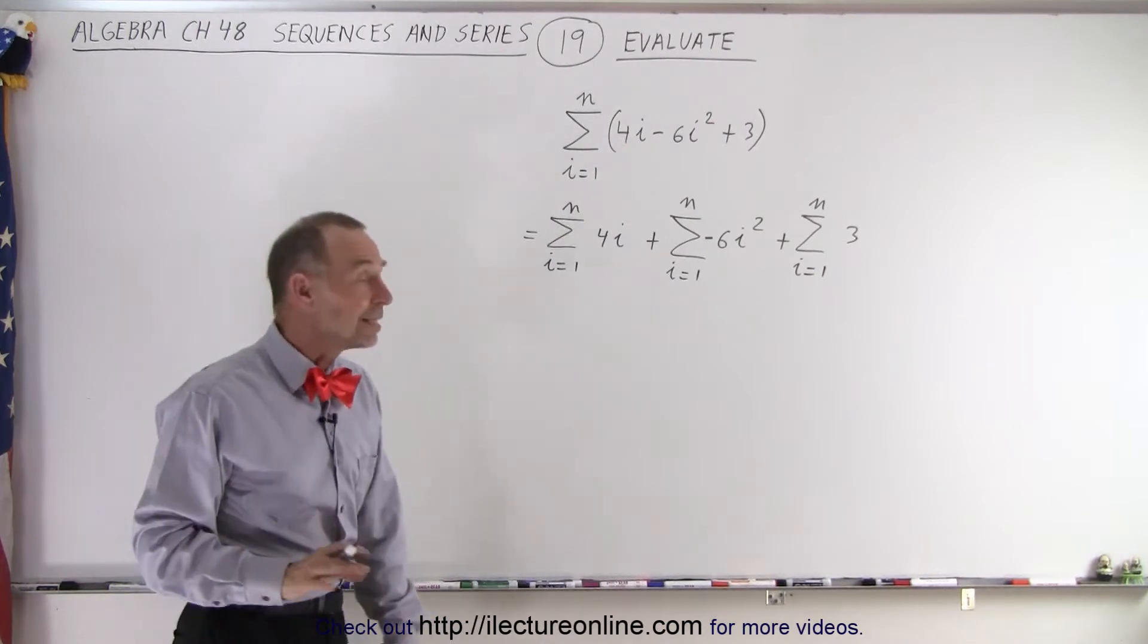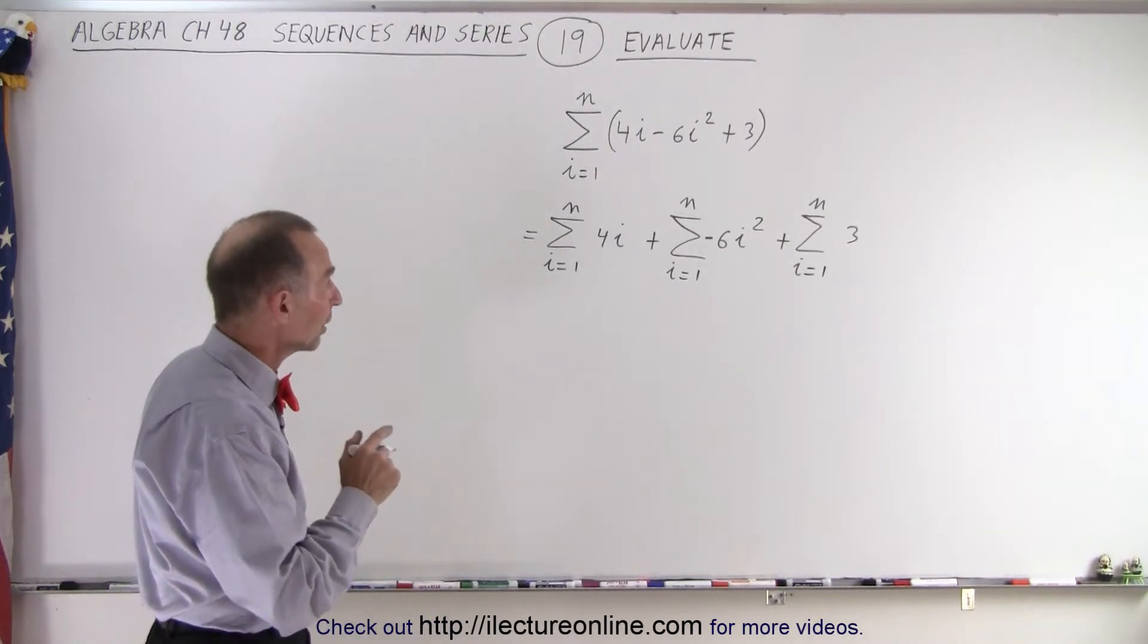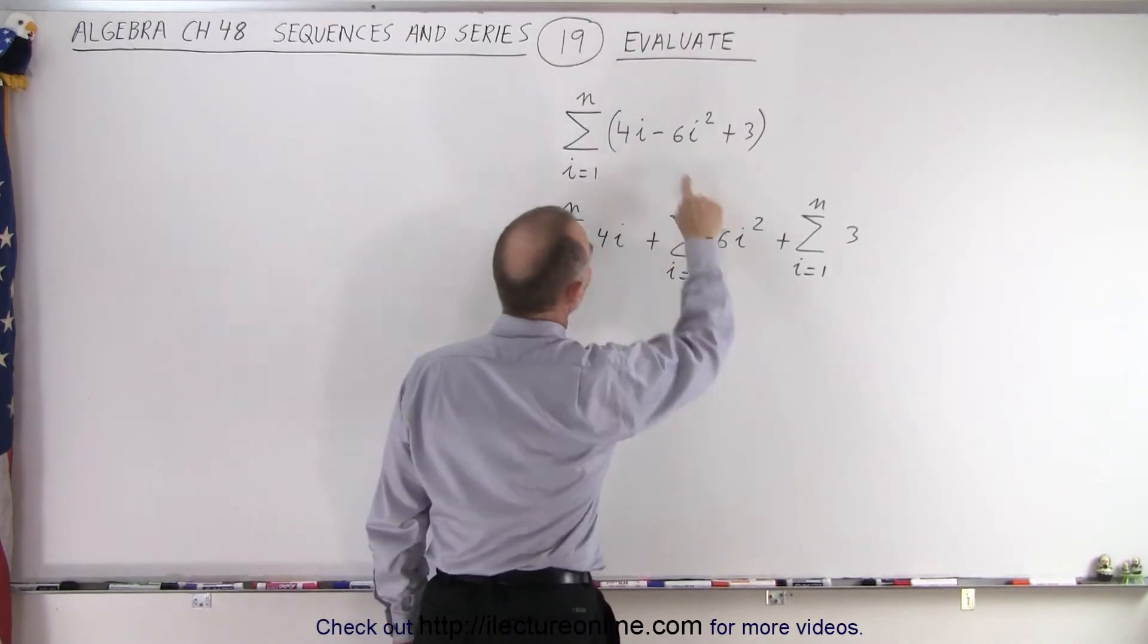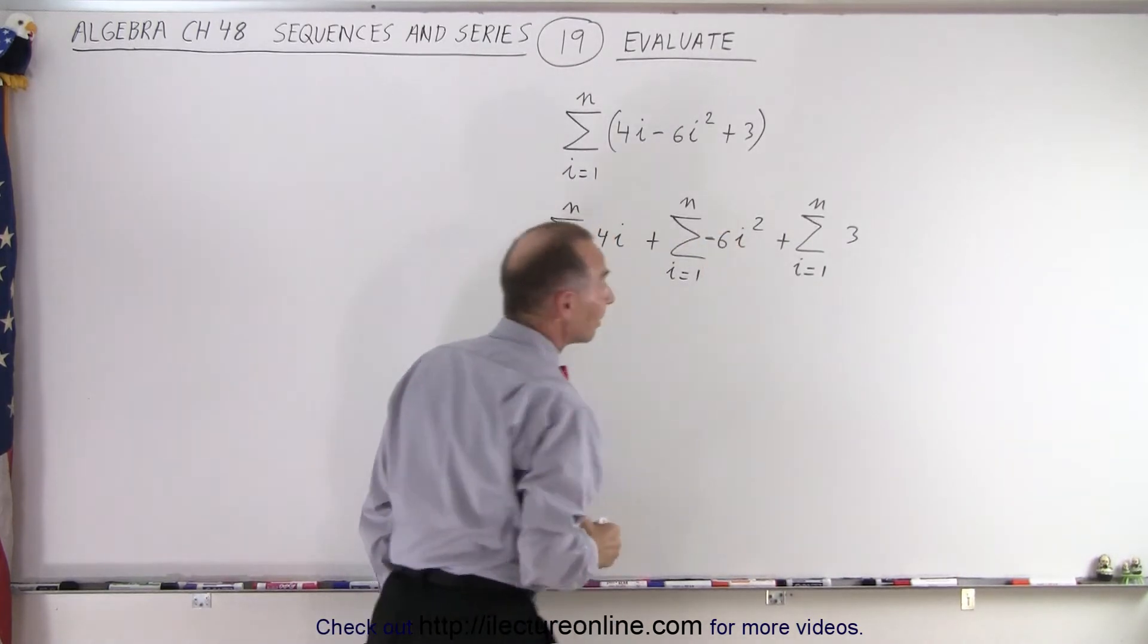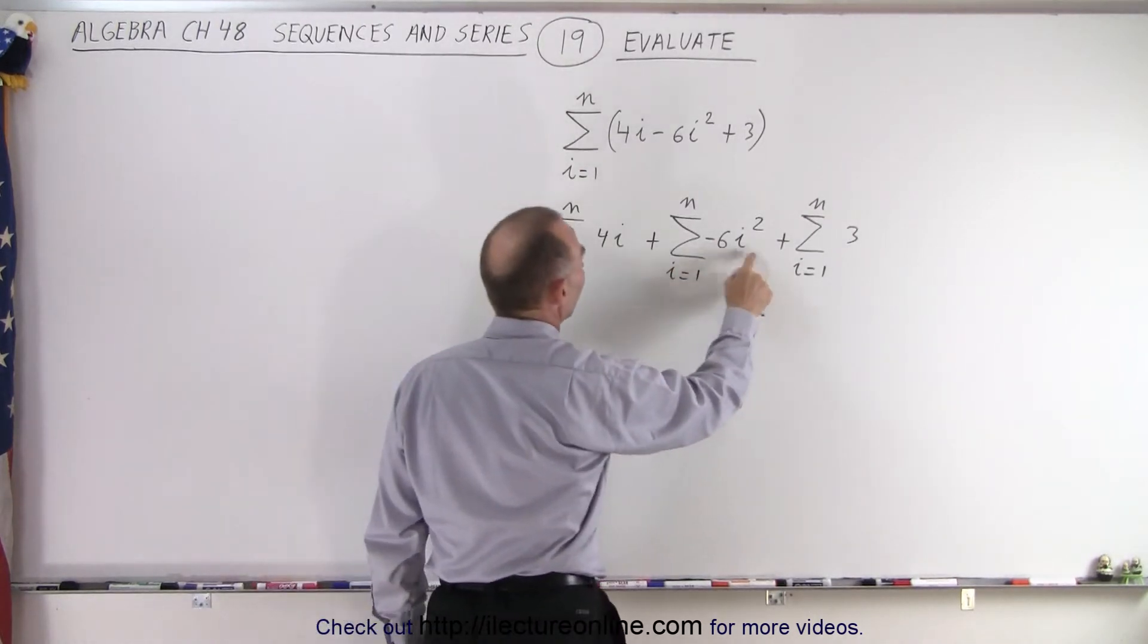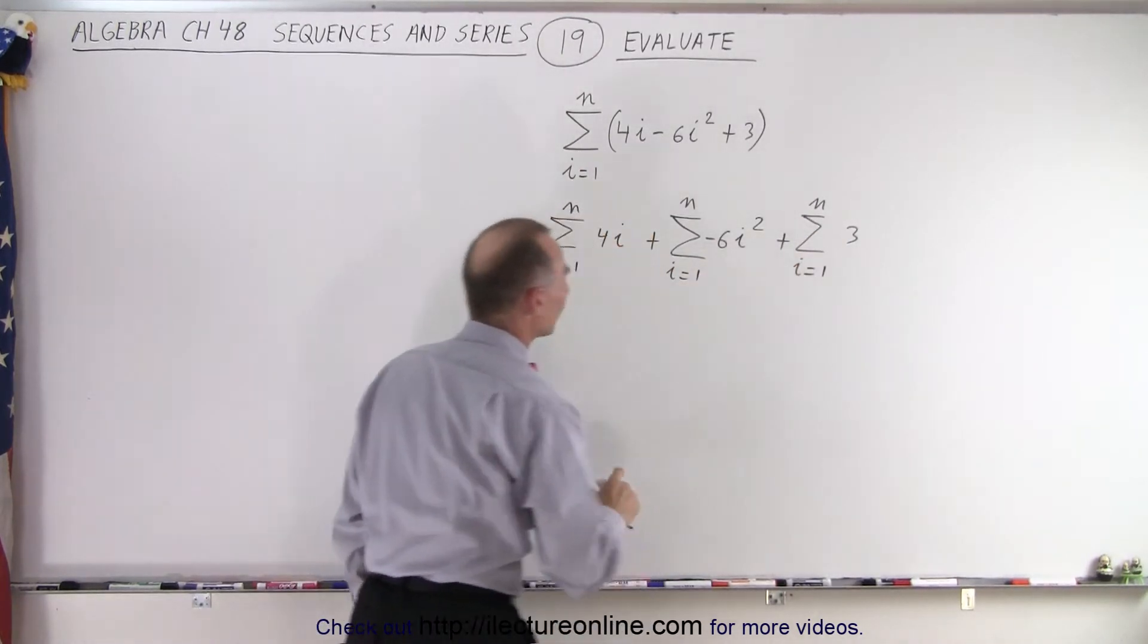Now we're not done yet with our rules because now you should realize that here we have a constant times i. Oh I forgot the negative didn't I? It's negative 6 times i squared, a constant times i squared, and here plus the summation of a constant.